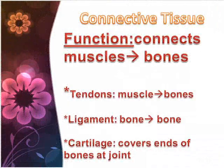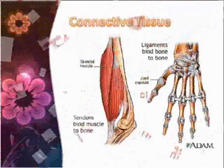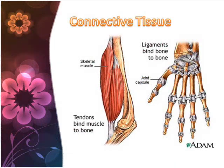Connective tissue. Function: connective tissue connects muscles to bones. The tendons connect muscles to bones, while the ligaments connect bone to bone. The cartilage covers the ends of bones at joints.